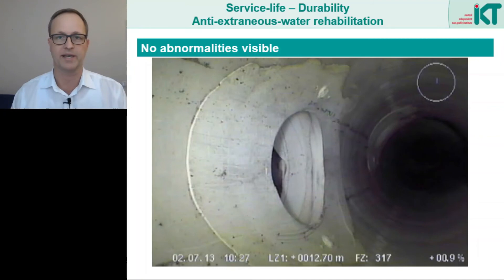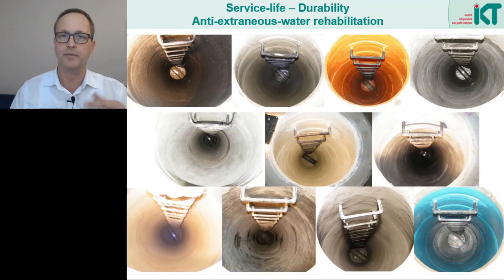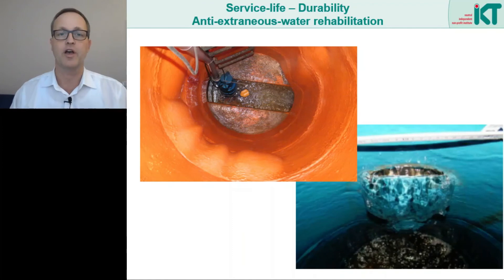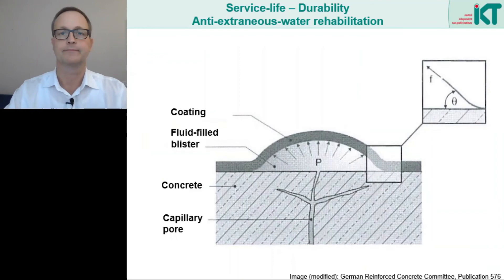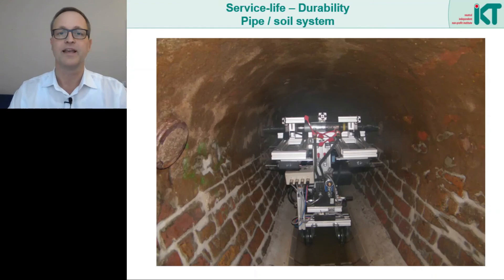Of course renovation methods must last longer than repair methods, but whether they actually do depends on the product — and the product includes more than just the material. The success of sealing against external water pressure depends not only on the coating material alone but also on the contact and bond to the substrate. Even if the coating material is strong enough, poor substrate strength can lead to detachment and water blistering, as seen here with water blisters in manhole coatings. Responsible for the failure is the lack of bond strength in the edge area, leading to ever larger blisters and ultimately tearing or cracking. Substrate preparation is therefore part of the product and decisive for the durability of the coating.